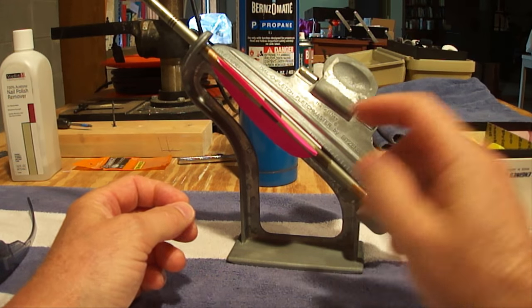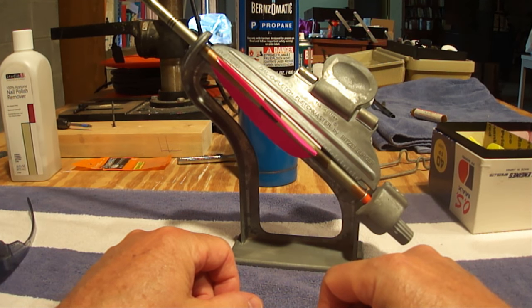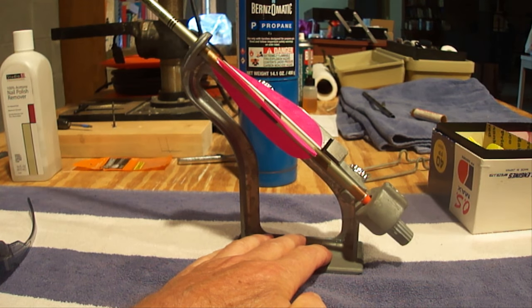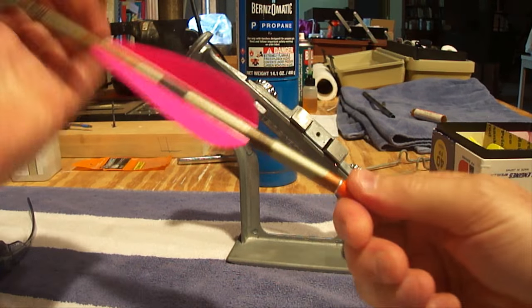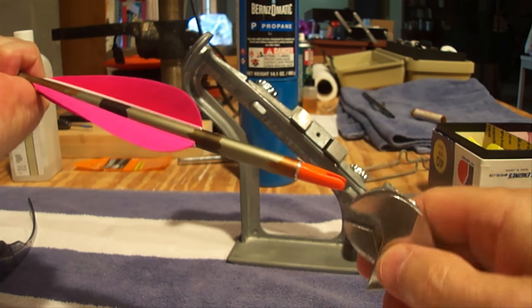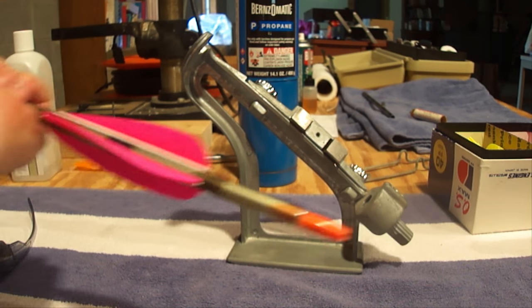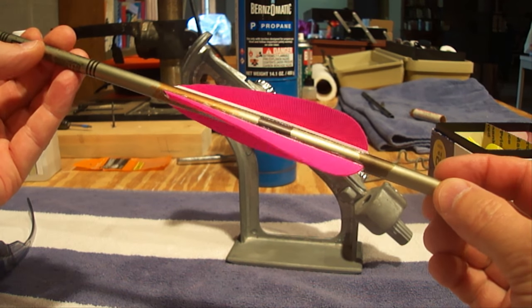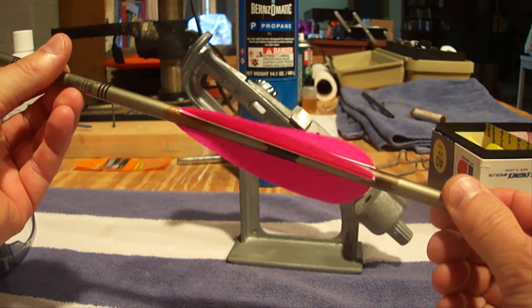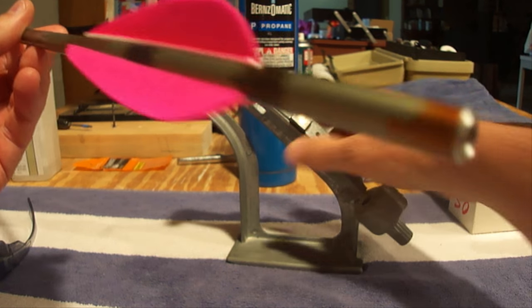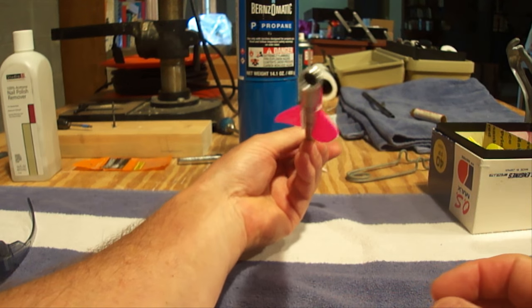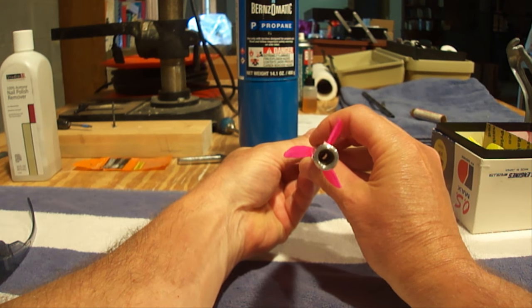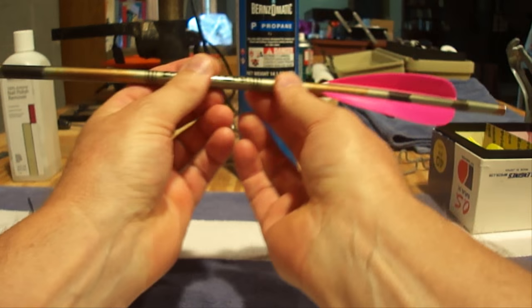Okay. So, we have all of our feathers glued on. We're ready to take it out of the fletching jig. So, we just squeeze our clamp. And we'll take off our knock adapter. And these things are just glued beautifully. Everything's symmetrical.